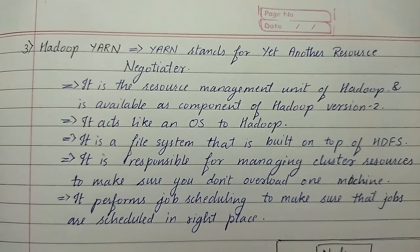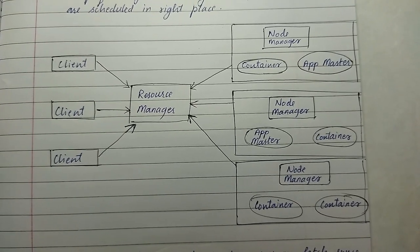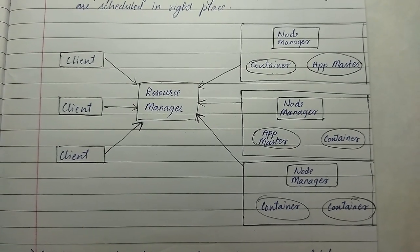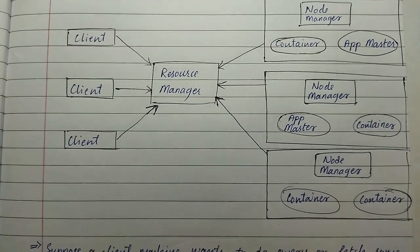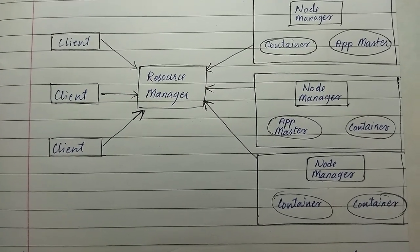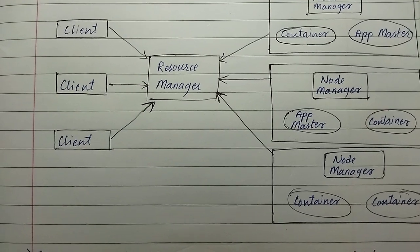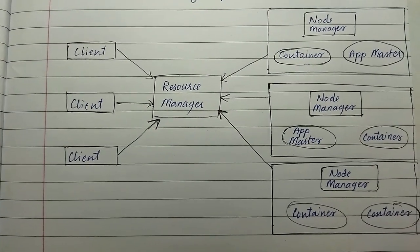How Hadoop YARN works: there are clients on the left side and node managers on other locations on the right side. Clients are on the left side and the resource manager manages the tasks.